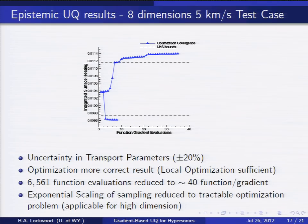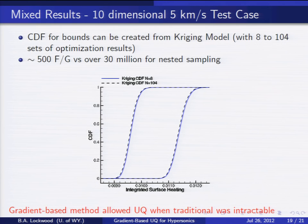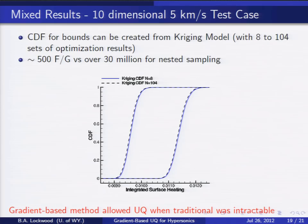The scaling of this problem has been improved dramatically. Before, with exhaustive sampling, we had exponential scaling. Now, provided this local optimization holds for even larger dimensions, we've reduced it to more of a linear scaling in terms of difficulty. For mixed-form problems, the goal is to give an interval-valued probability, combining both approaches. We run multiple optimization results at different aleatory values and create a surrogate over those. Traditional nested sampling required 30 million samples to produce the bounds curves, while the combined optimization and surrogate approach captured those bounds with about 500 function-gradient evaluations — making UQ tractable where traditional methods are simply intractable for realistic calculations.